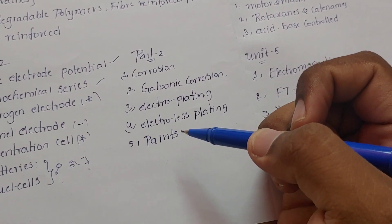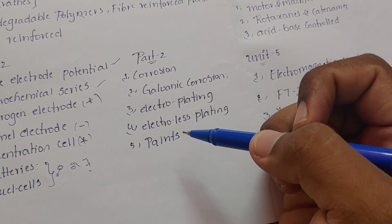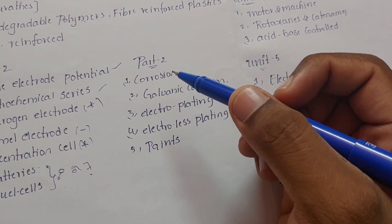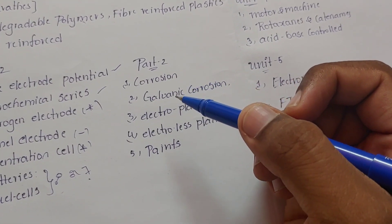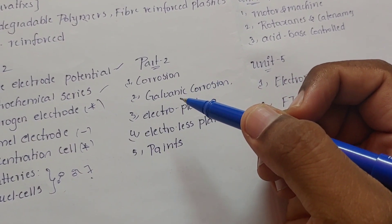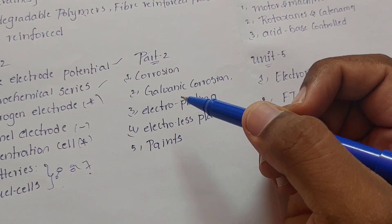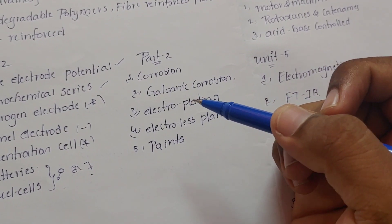Paints is the easy topic in the corrosion unit. The main things to focus on are properties and applications of paints.